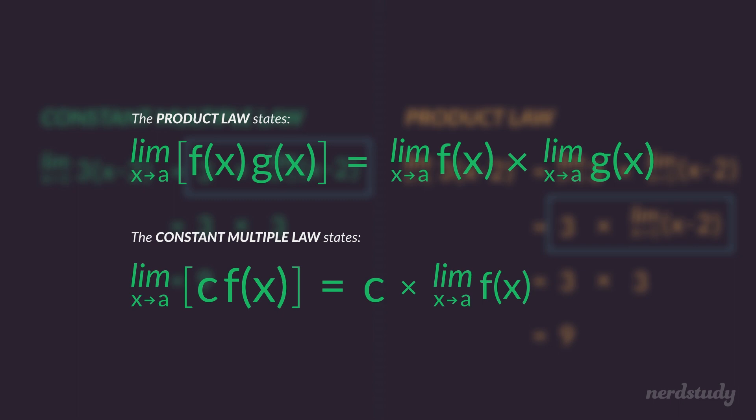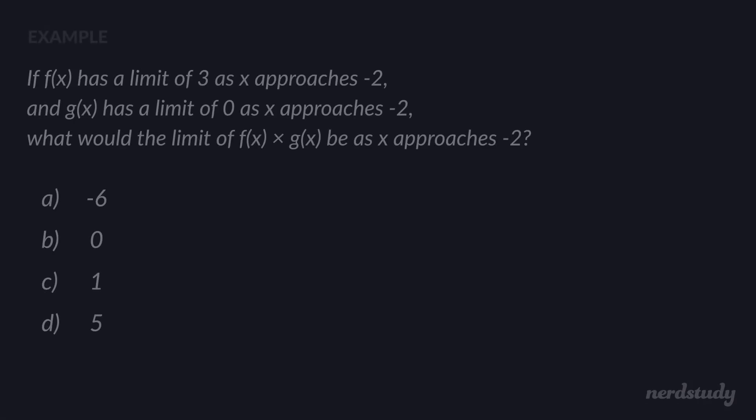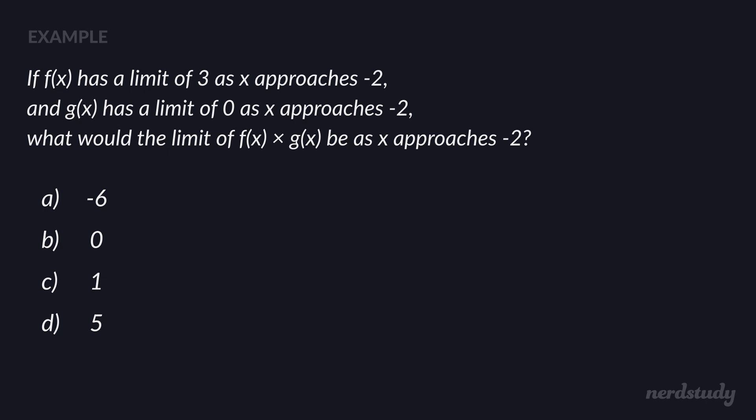Most of the time, questions will come with a lot of algebra, and sometimes they'll even come in paragraph form — don't be alarmed. Just work out what the question is saying, think about the laws you know, and use them to your advantage. In this example, if f of x has a limit of 3 as x approaches negative 2, and g of x has a limit of 0 as x approaches negative 2, what would the limit of f of x multiplied by g of x be as x approaches negative 2?